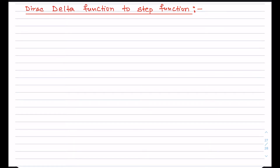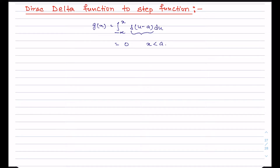In this video I will discuss how to relate the Dirac delta function to a step function. Let's consider this integral: g(x) equals the integration from minus infinity to x of delta(u minus a) du. As you can see, the variable x is in the upper limit of the integral. The value of g(x) is zero if we stop the integration before we reach the peak of the delta function — that is, for the range x less than a. Here, delta(u minus a) represents a delta function whose peak is at u equals a.